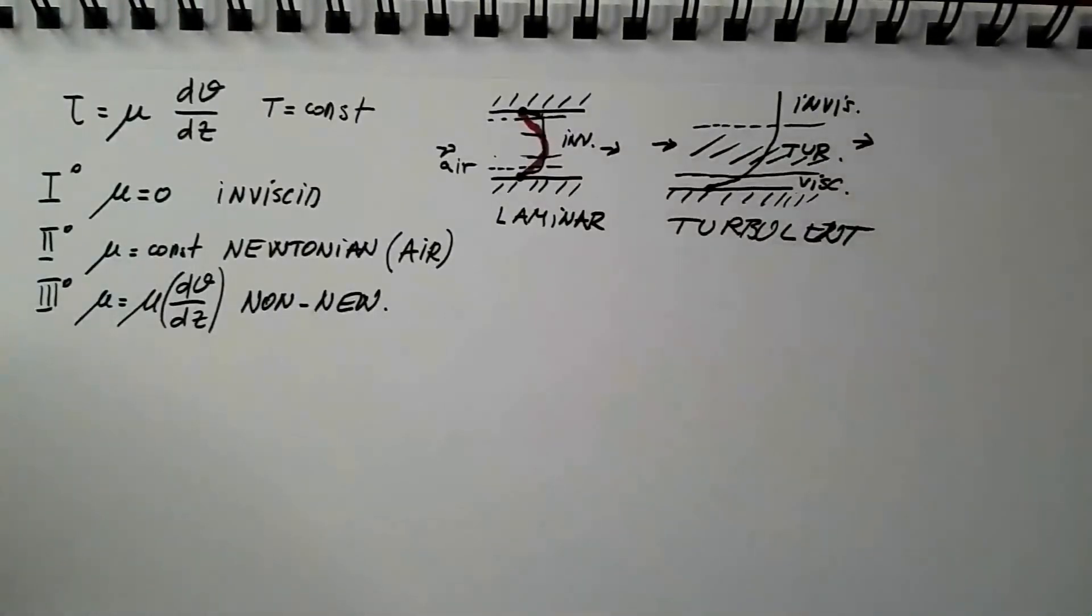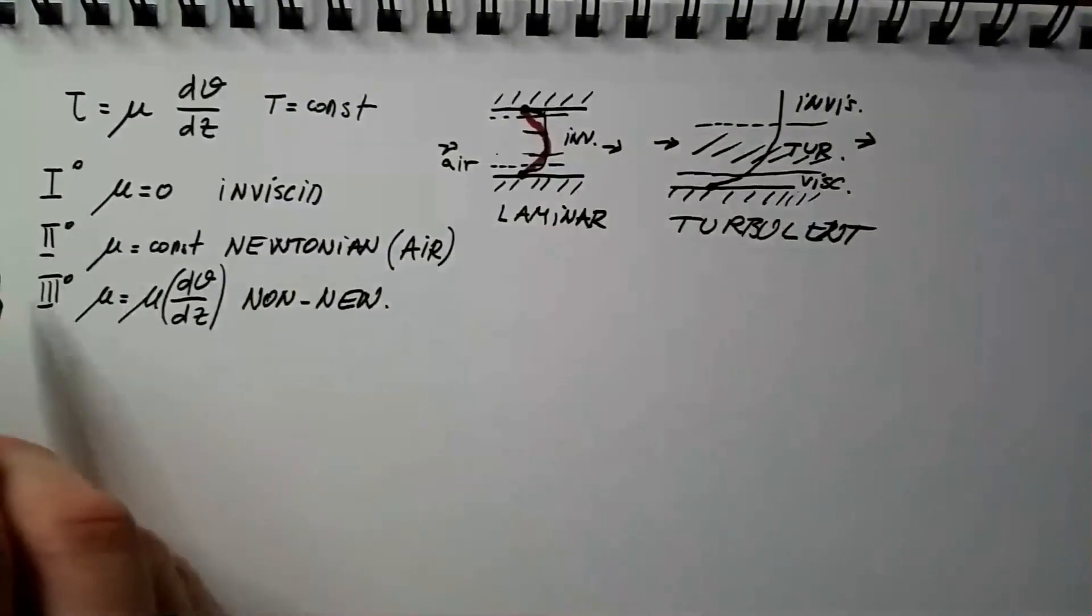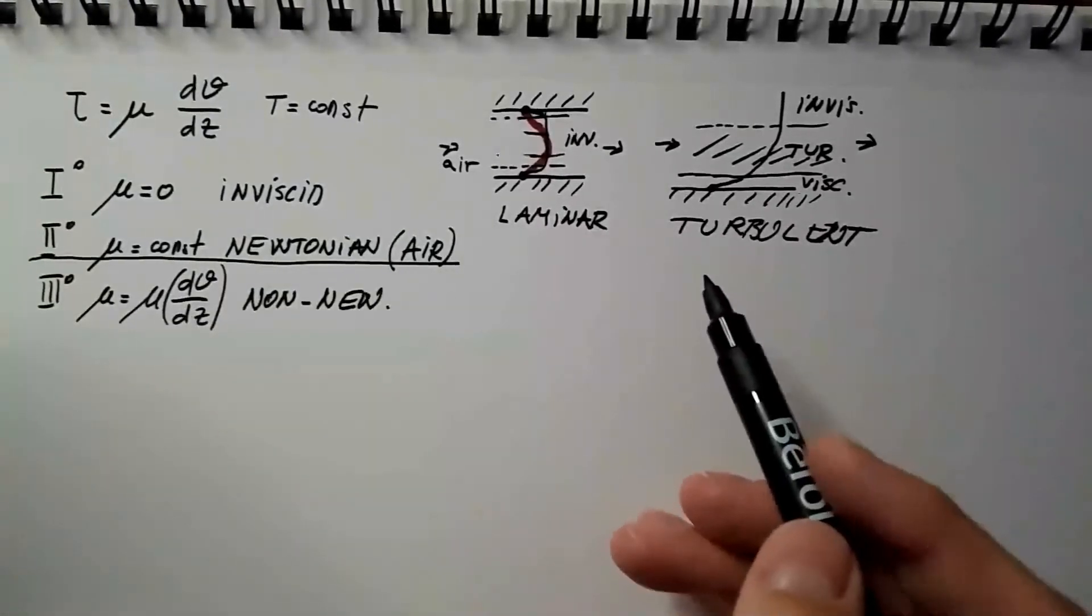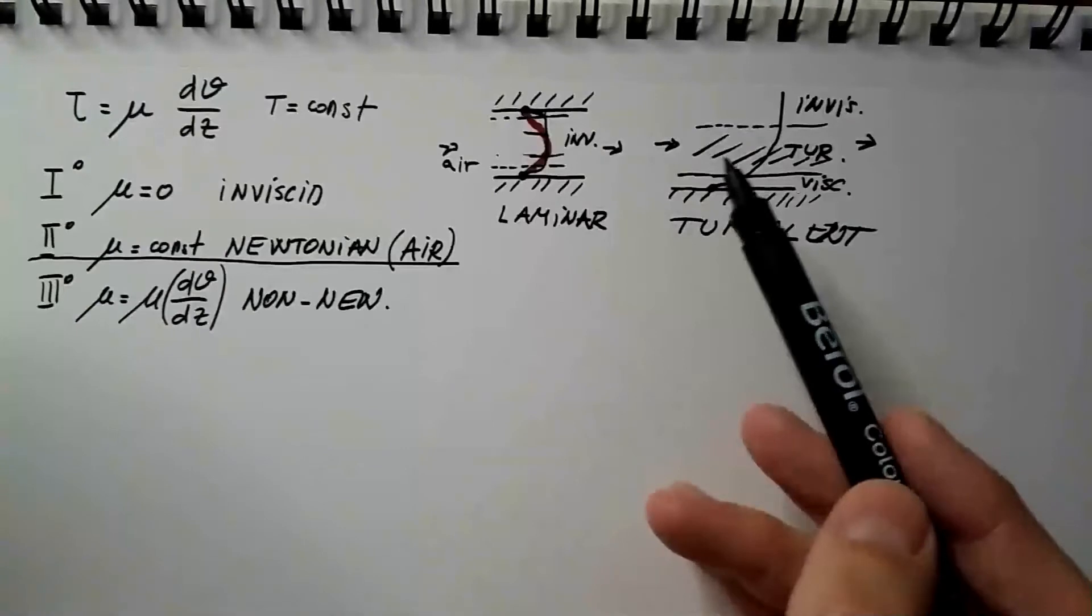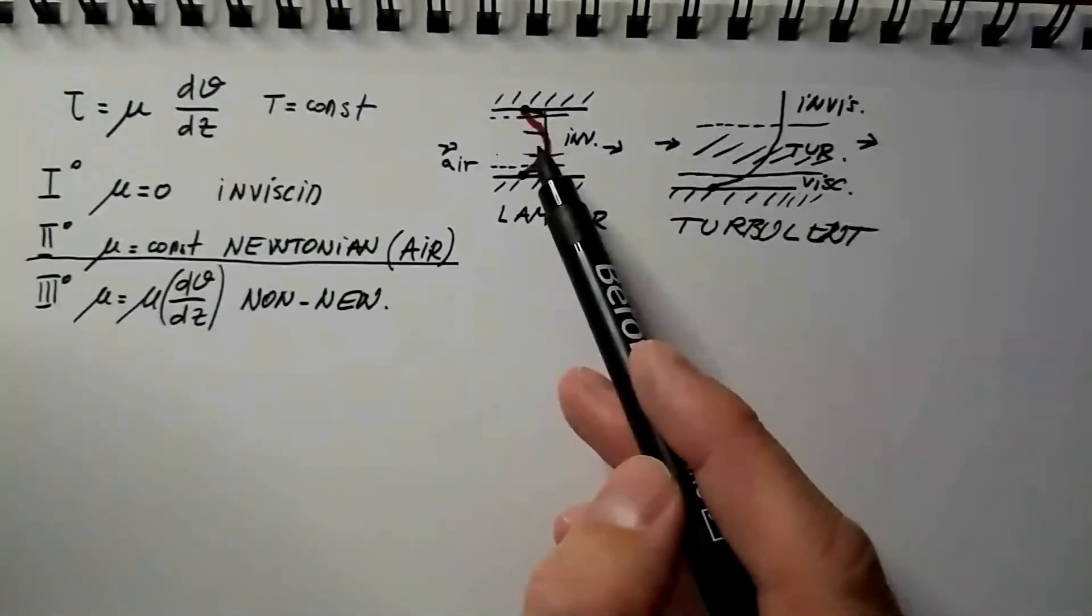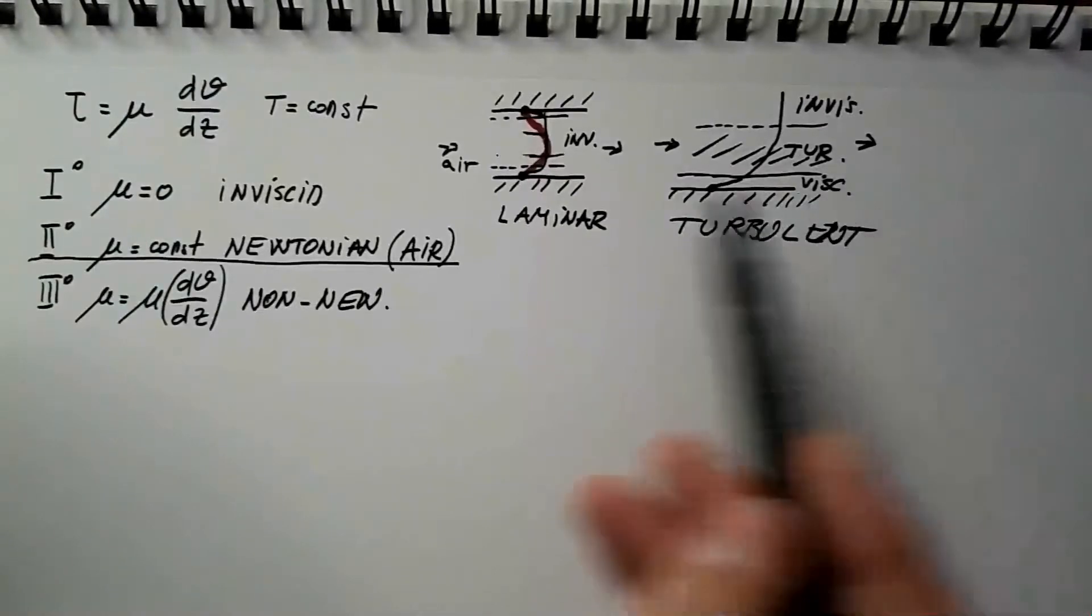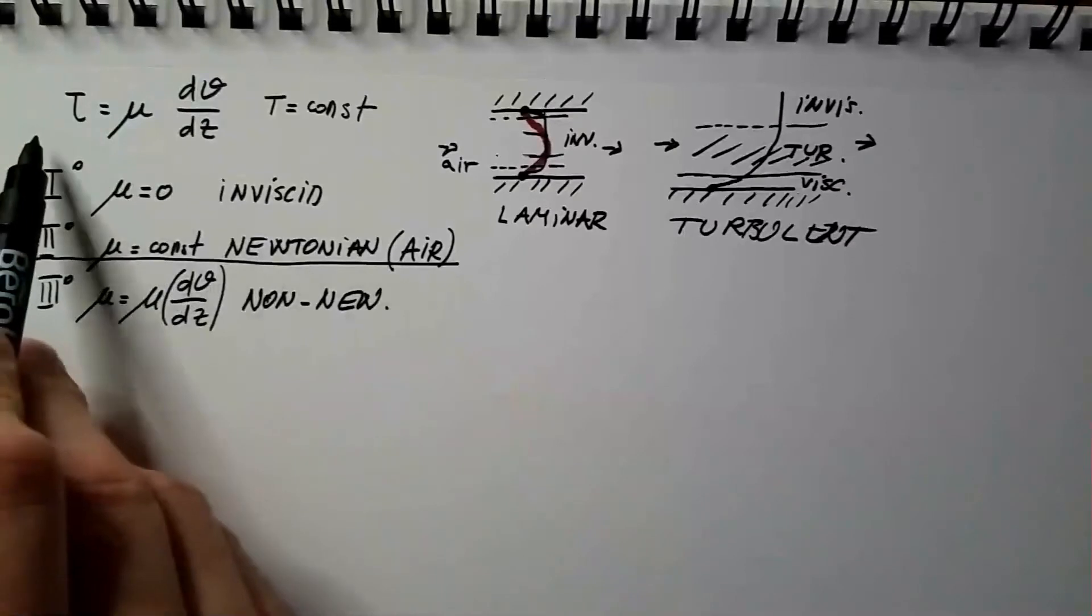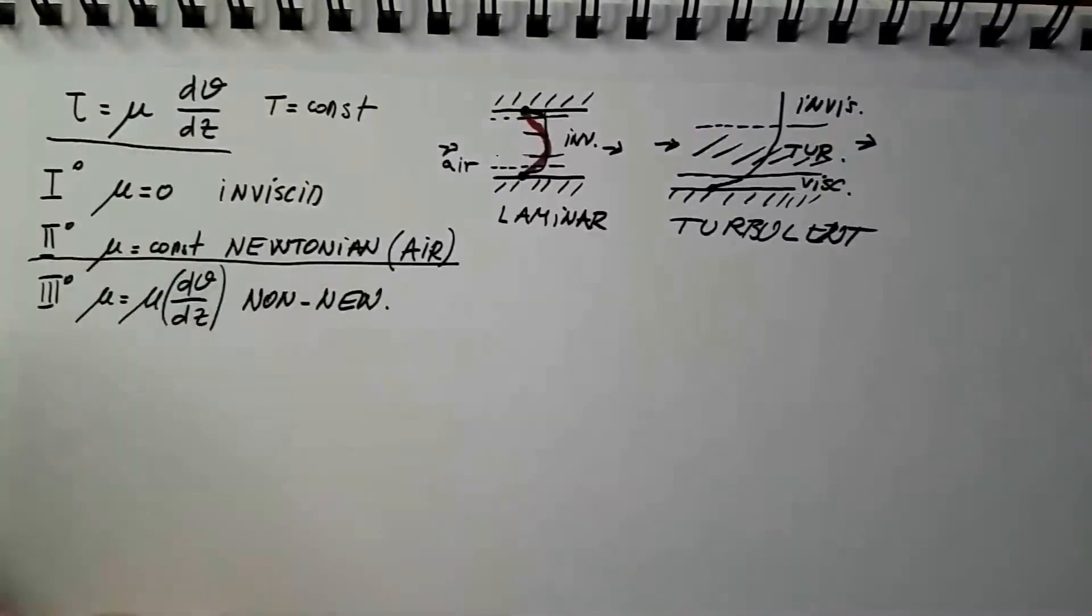Okay, so this was discussion on inviscid and Newtonian fluids. Air, to a very good approximation in many phenomena, is really an inviscid fluid. If viscosity needs to be accounted for, then it is a Newtonian fluid, and this relationship, Newton's law of viscosity, is valid.